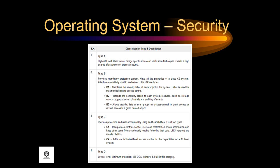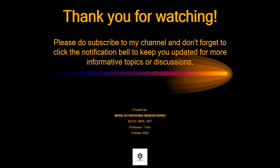Type D is the lowest level, providing minimum protection. MS-DOS and Windows 3.1 fall in this category. That's all regarding the operating system in terms of file system and security. Thank you for watching and have a nice day.